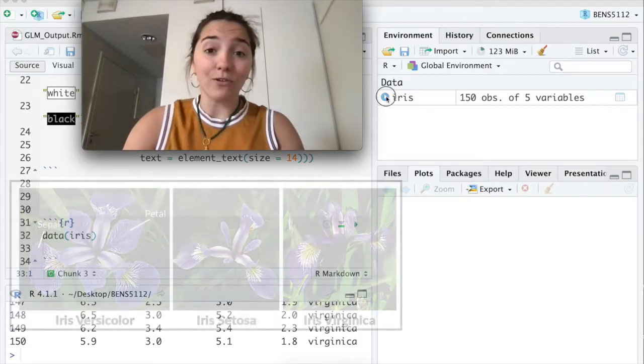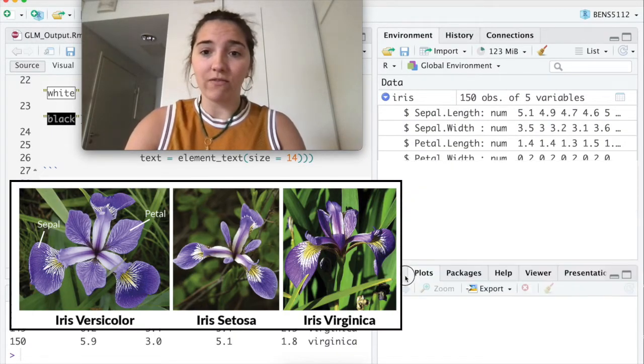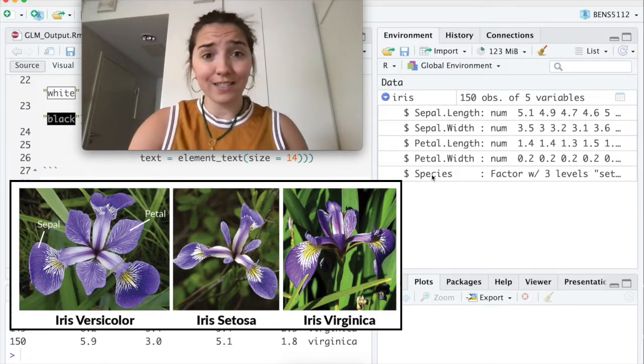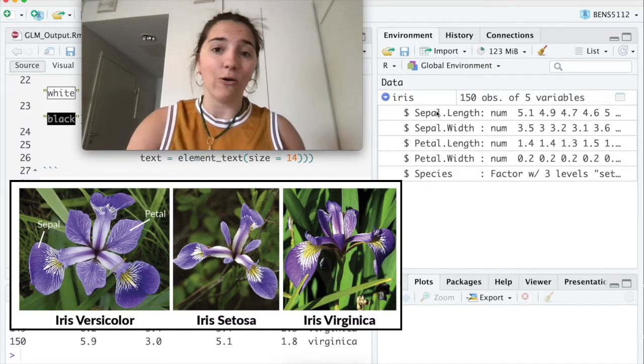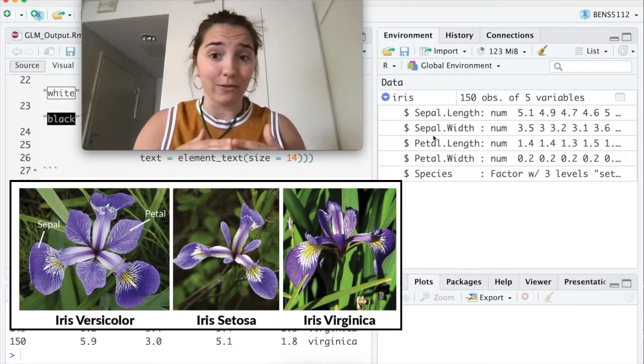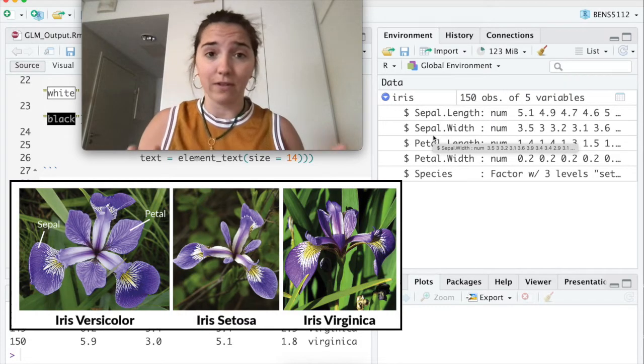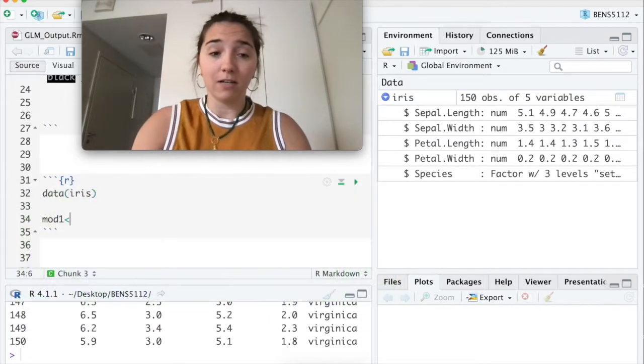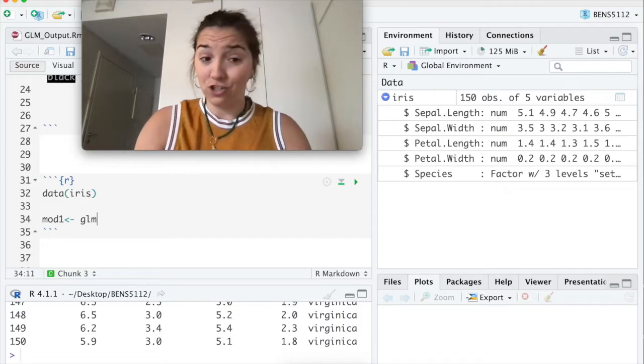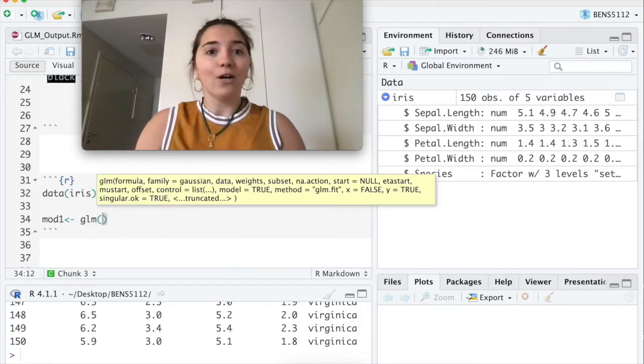Iris is already in R just to give a very brief overview. Iris is our beautiful data set classic, where we've got species of different irises that all then have different measures of the petals and sepals and different parts of them. First, I'm going to name it. I'm going to call it model one. I'm going to pull up GLM. Brilliant.